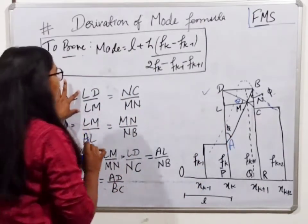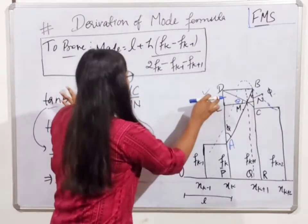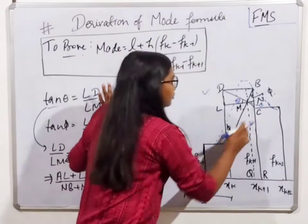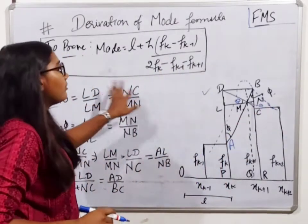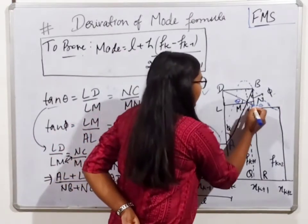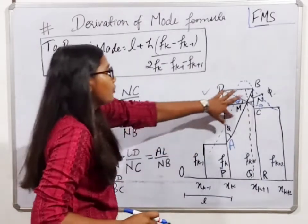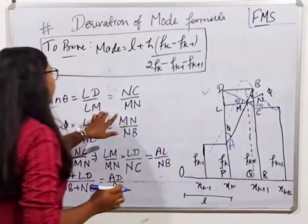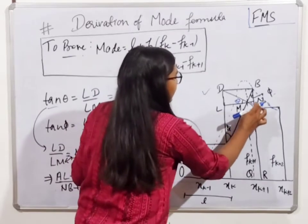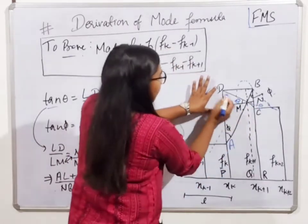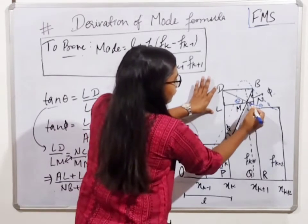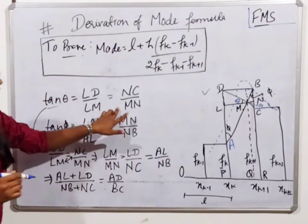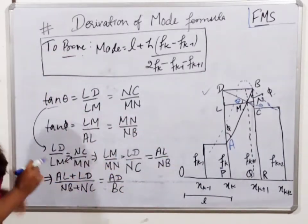So LD by LM equals NC by MN, based on the triangle properties. For tan(phi), looking at the second triangle: the perpendicular is LM and the base is AL, so tan(phi) equals LM divided by AL. Similarly, for the other triangle, tan(phi) gives MN divided by NB. From these two expressions, LD by LM equals NC by MN. I hope this will be clear once you see the diagram.